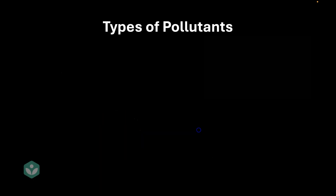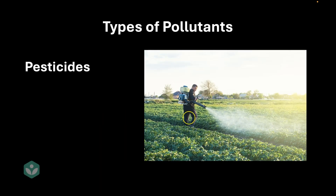Now to our last type of pollutant: pesticides. Pesticides are sprayed over crops to kill pests, insects, and microbes that would harm the crop. But these pesticides are harmful for humans as well, especially when used in very large quantities or when sprayed indiscriminately.